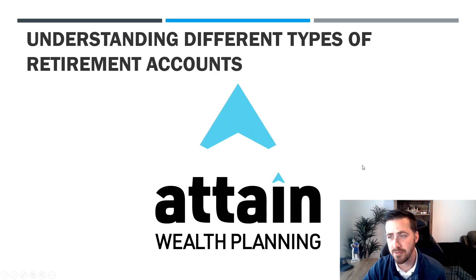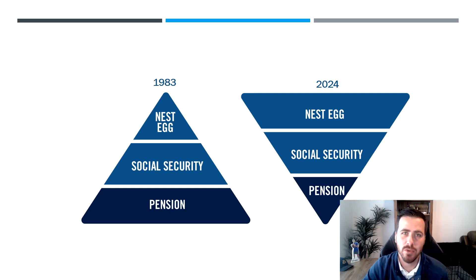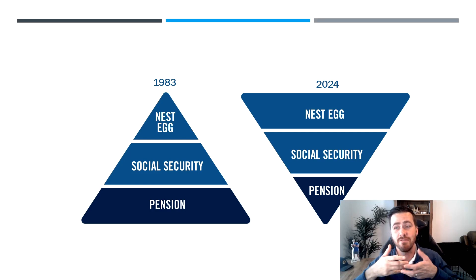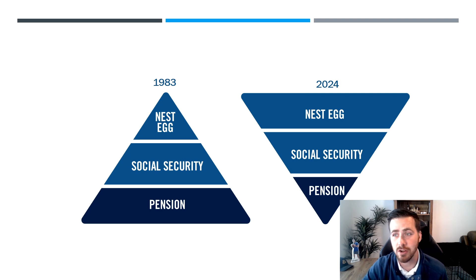Understanding different types of retirement accounts — the biggest thing I like to talk about is what's different now than it used to be. Back in 1983, the biggest piece of your income was your pension, the next was Social Security, and after that your nest egg. The way it is now, that triangle is basically flipped — the biggest piece in most cases is your nest egg, then Social Security, and then you're lucky if you have a pension. Some people, like state employees and teachers, may still have a very large pension.